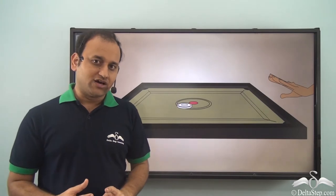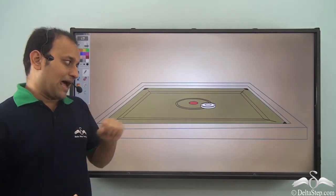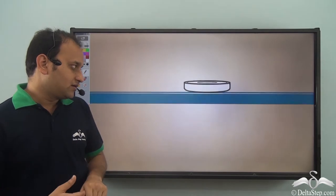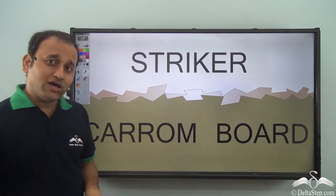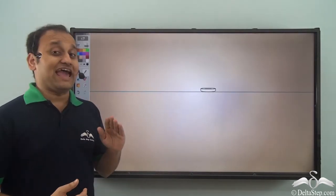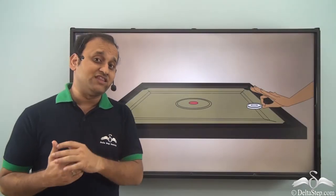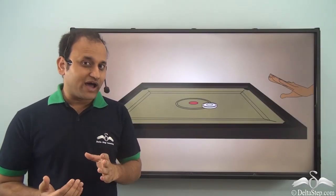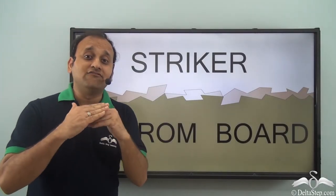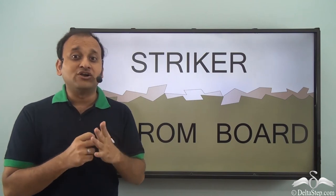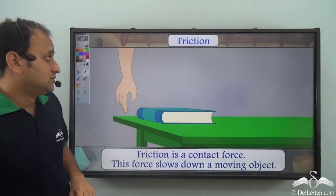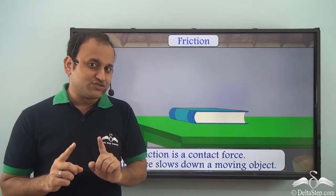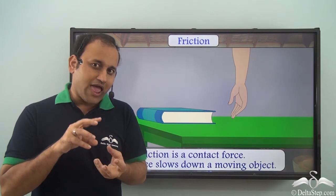Without the powder, when you hit the striker, if you zoom in you will see that both the striker and the carom board are not exactly smooth surfaces. They have very fine irregularities between them, and that is why without the powder these irregularities lock in with each other. As a result, the movement of the striker is restricted. So you can say that friction is working between the striker and the carom board.